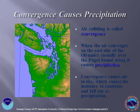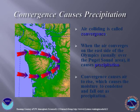When air converges, it is forced to rise. Higher up, it is colder and water condenses out of the air, which results in clouds and precipitation as long as moisture is available. This short animation will show you where there is convergence, there can be precipitation.